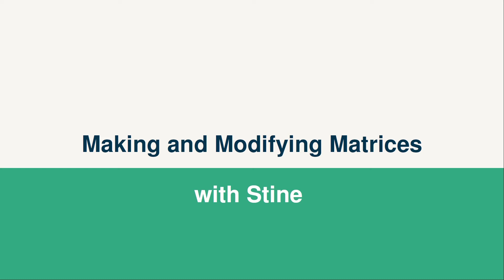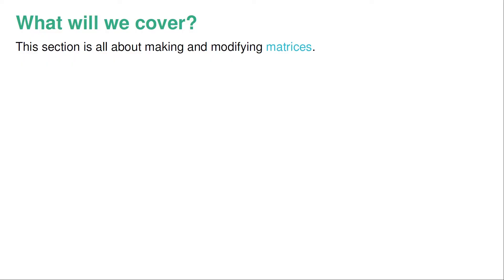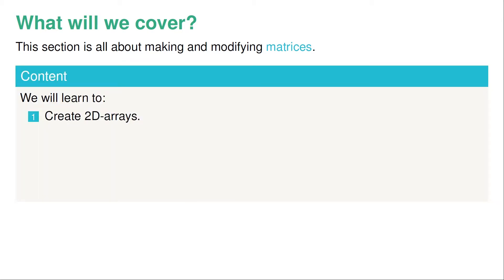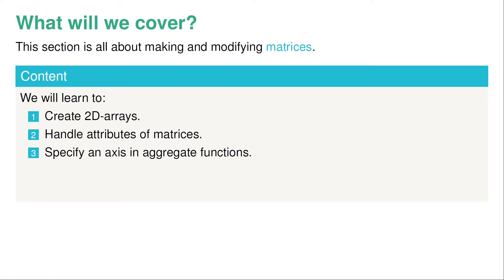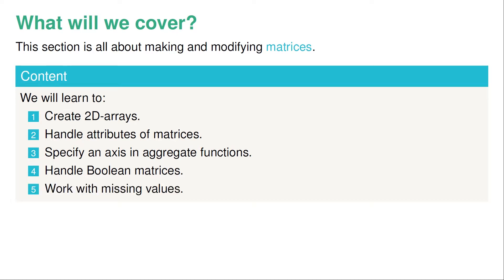Welcome to this section on making and modifying matrices. We are going to learn to create 2D arrays, also known as matrices, handle their attributes, and specify an axis in aggregate functions like max and mean — so we can take the mean of specific columns instead of the entire matrix. We'll also learn about Boolean matrices and how to work with missing values.